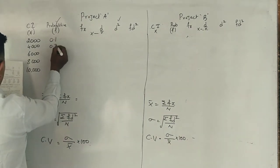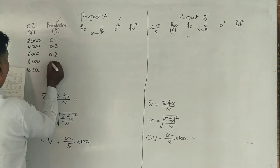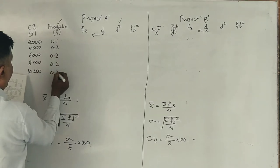Project A probabilities: 0.1, 0.3, 0.2, 0.2, 0.2.